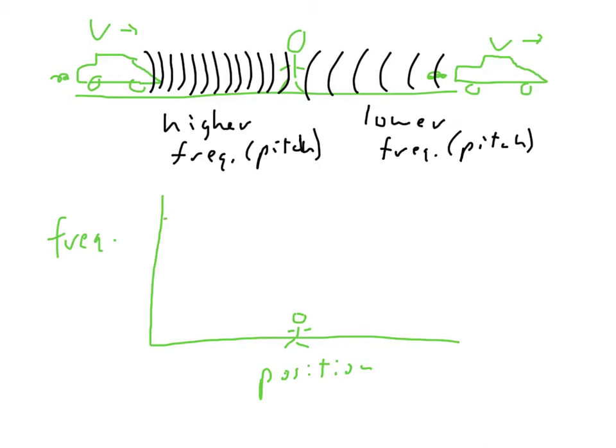As it's coming toward the person, it's going to be at a higher frequency. And then as it's passing them, it's going to jump down to a lower frequency. So the Doppler effect is the fact that it's higher coming toward, and it shifts to lower going away.